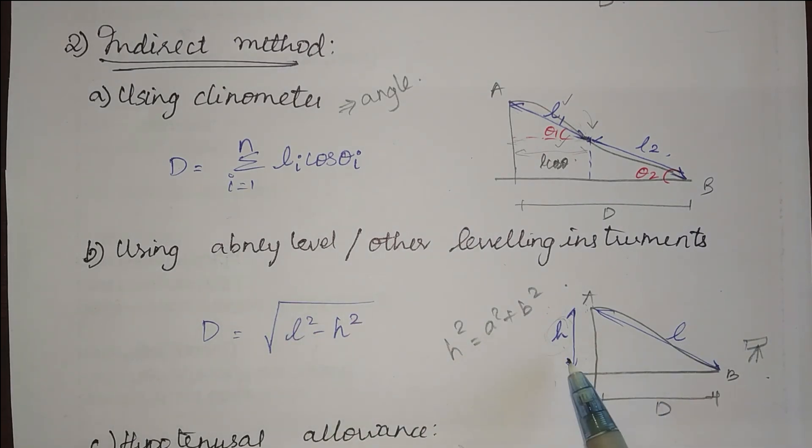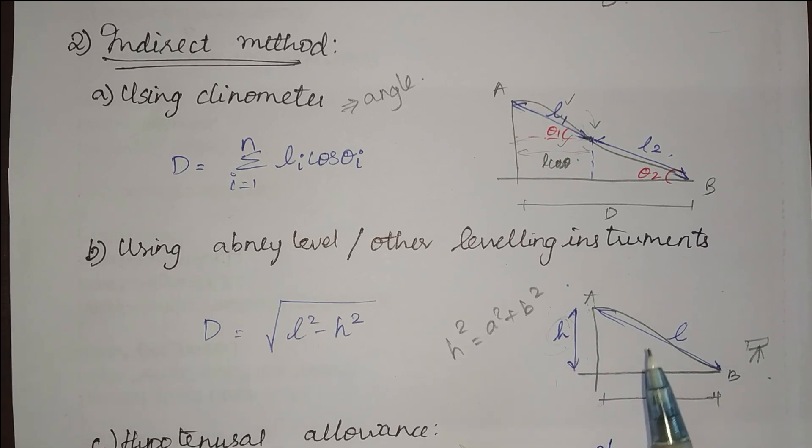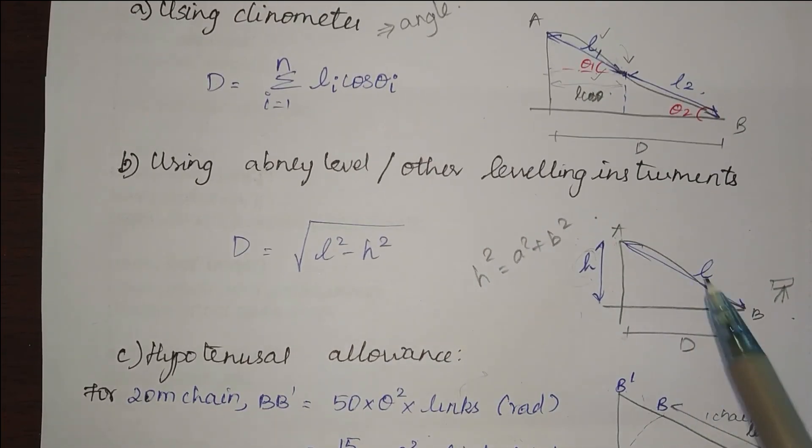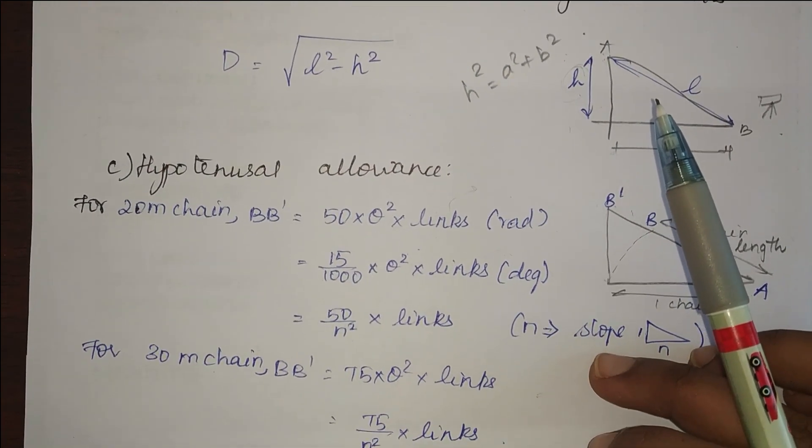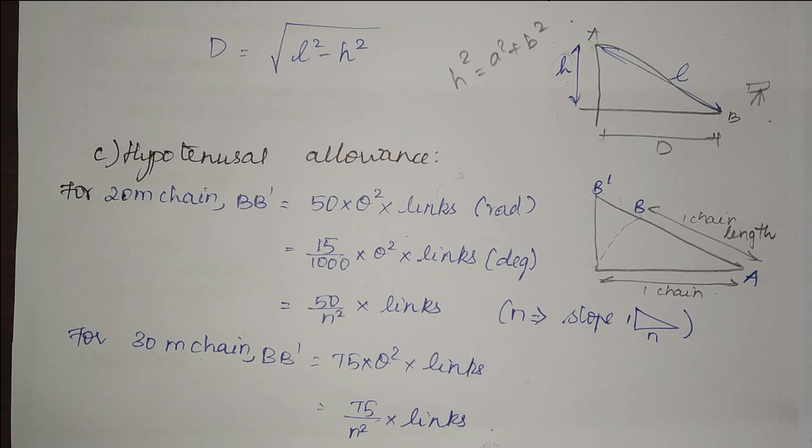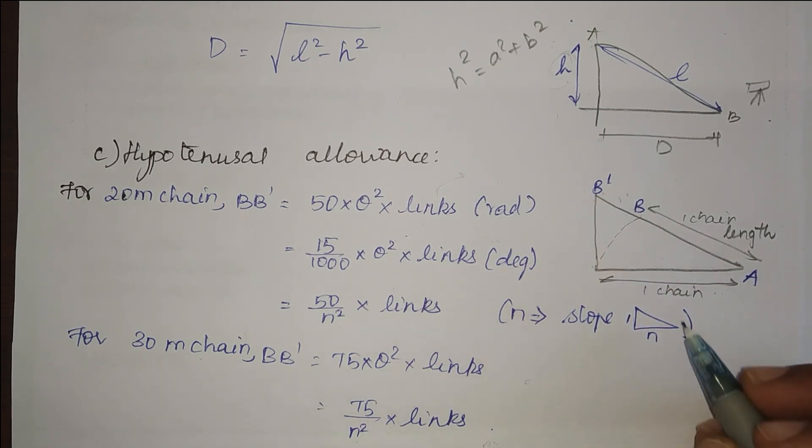The next one is hypotenusal allowance. This is a very important and interesting topic for gate point of view. I consider this triangle where my horizontal distance is one chain length, but when I see the sloping distance it is my one chain length plus BB dash.